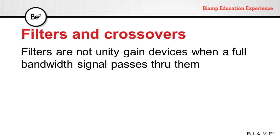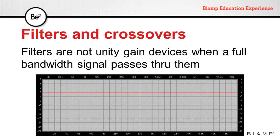Filters and crossovers can also affect the gain structure of our system. Although small when compared to mixers and dynamic processors, filters and crossovers can also change the level of a signal depending on the filter settings and the type of signal passing through them. A full bandwidth signal has energy at all frequencies in the audible range. If we apply a filter and cut some of that bandwidth, the overall level of that signal will be reduced.